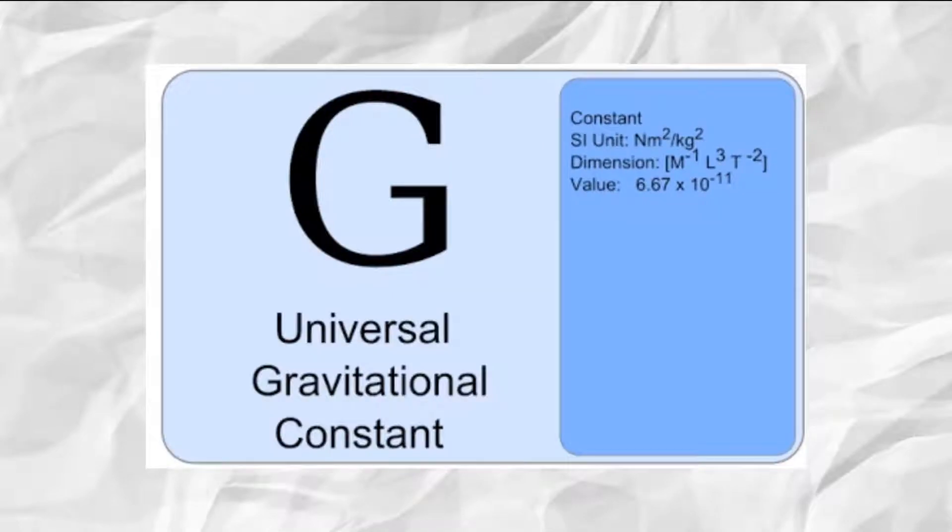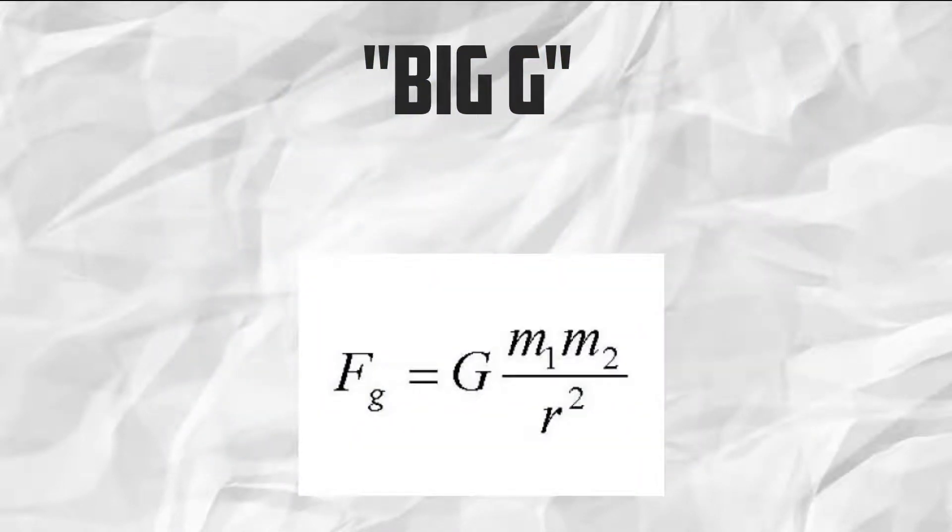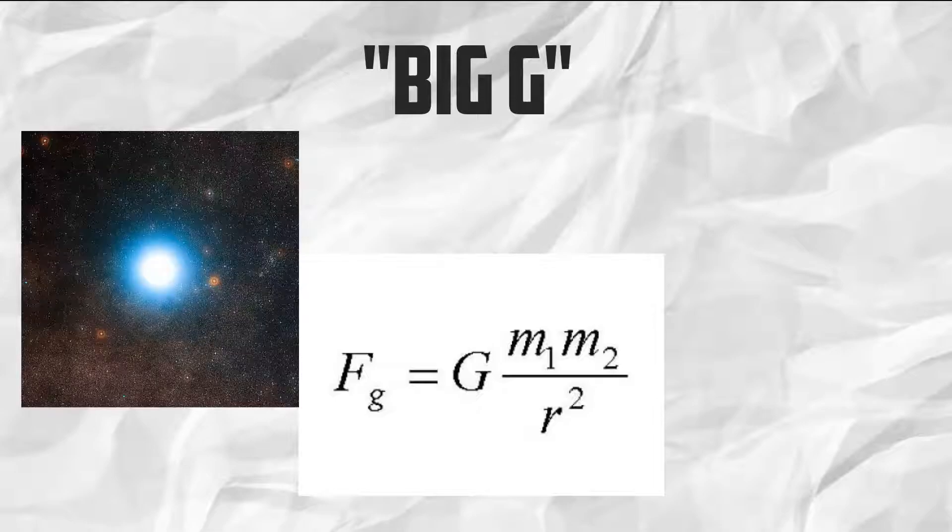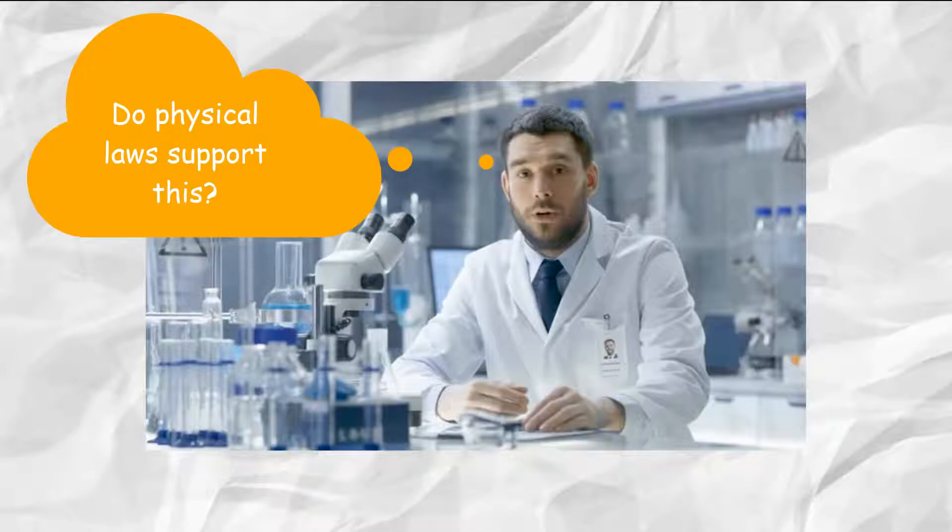For example, the gravitational constant, also known as Big G, supports Newton's equation of gravity, can help find a star's luminosity, and is used in Einstein's general relativity. When making any scientific claims, it's best to note these physical laws.